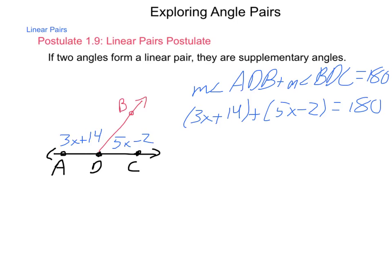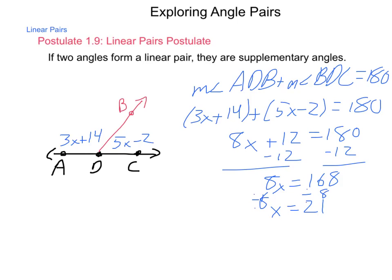So a supplementary pair of angles, the measure of angle ADB plus the measure of angle BDC has to equal 180 degrees. Well, the first angle is 3x plus 14. The second angle is 5x minus 2. That's supposed to be 180. Now dropping our parentheses and combining like terms, we have 8x plus 12 equals 180. Subtract my 12 from each side. I get 8x equals 168. So x is going to equal 21.